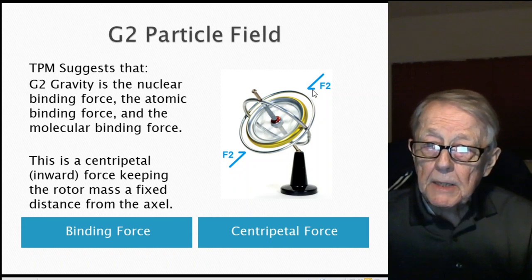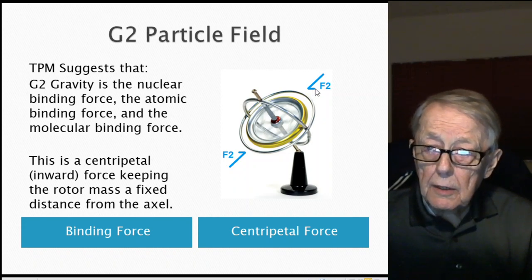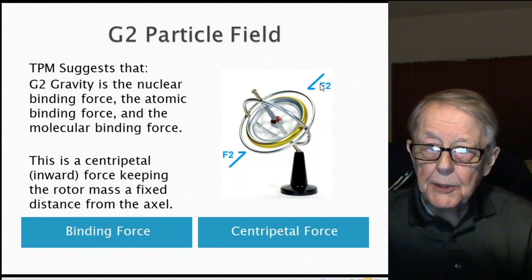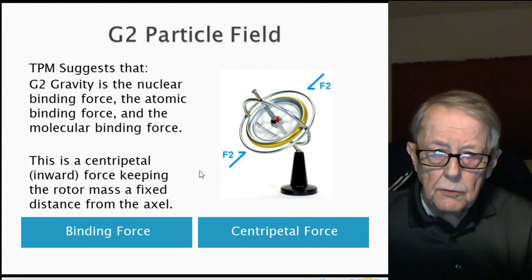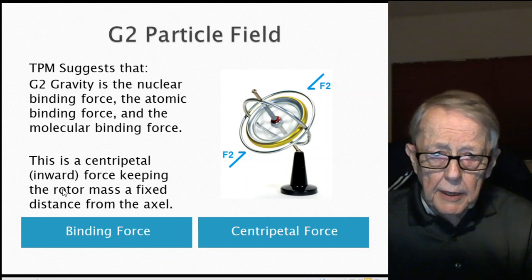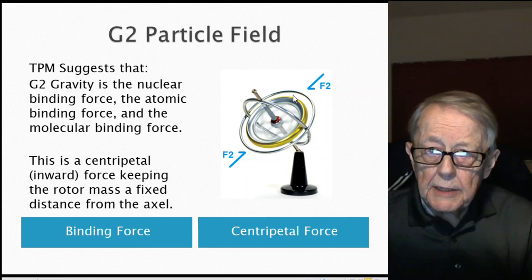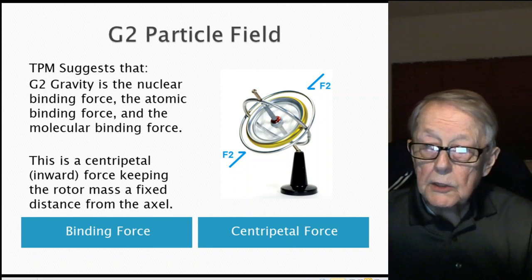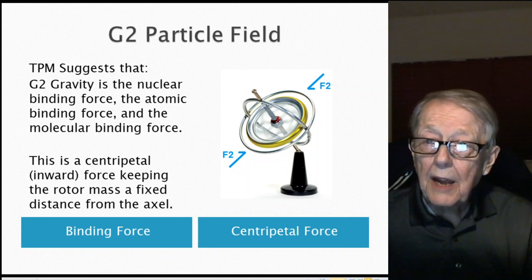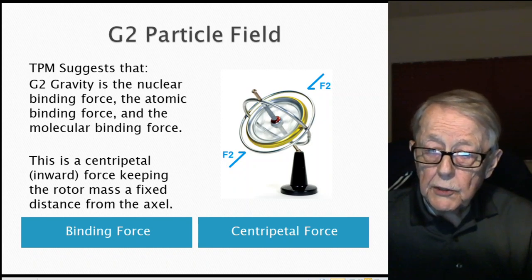This is the centripetal force that helps determine how this moves. It keeps the rotor at a fixed distance from the axle. That's the G2 particle field, its part in the motion of the gyroscope.